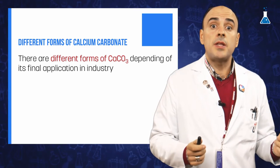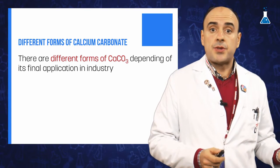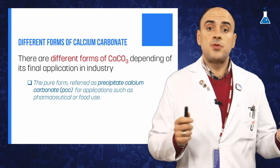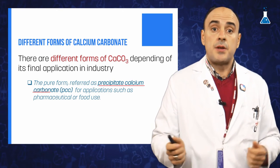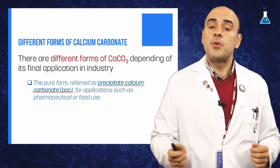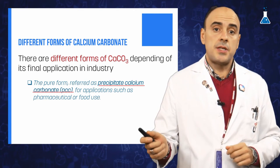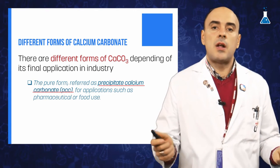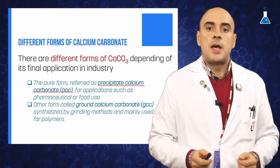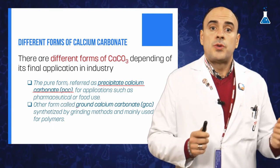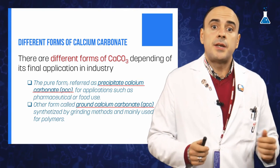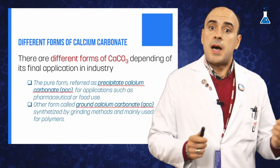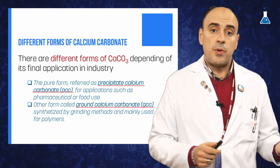Calcium carbonate is used in two forms in industry depending on its final application: a pure form referred to as precipitated calcium carbonate (PCC), used for applications where purity is needed such as pharmaceutical or food use; and another form called ground calcium carbonate (GCC), synthesized by grinding methods and mainly used in the polymer industry.